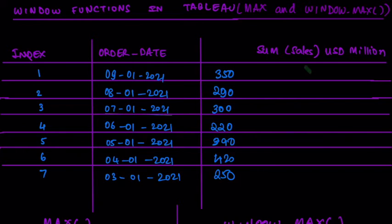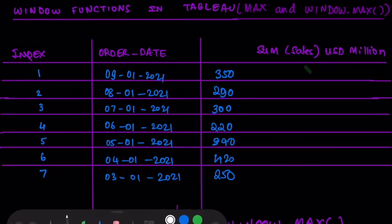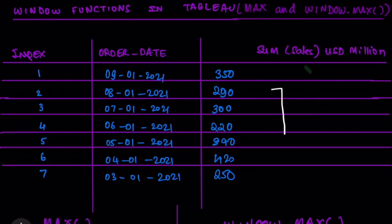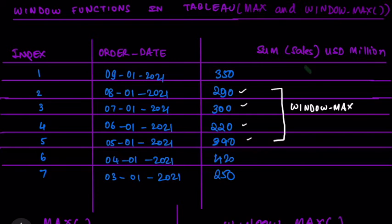Whereas with a WINDOW_MAX function, you can actually define the range within which you are looking to find the maximum, minimum, or any of those parameters. For example, suppose I just want the maximum among these specific records — I can do a WINDOW_MAX function and calculate the WINDOW_MAX of, say, four records, and my answer would be 390, because the maximum among those four records is actually 390.